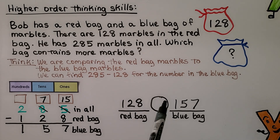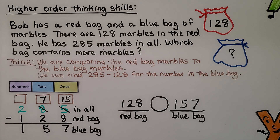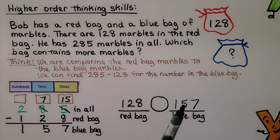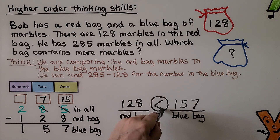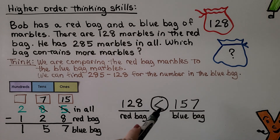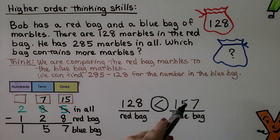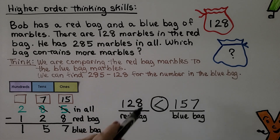To compare them, we write a less-than, greater-than, or equal-to sign in the circle. They both have a hundred, but when we look at the tens place, 157 has five tens and 128 has only two tens — so 157 is the greater number. We write: 128 is less than 157. The big open side of the symbol goes toward the greater number and the little pointy side goes toward the lesser number. The blue bag has more, with 157 marbles.